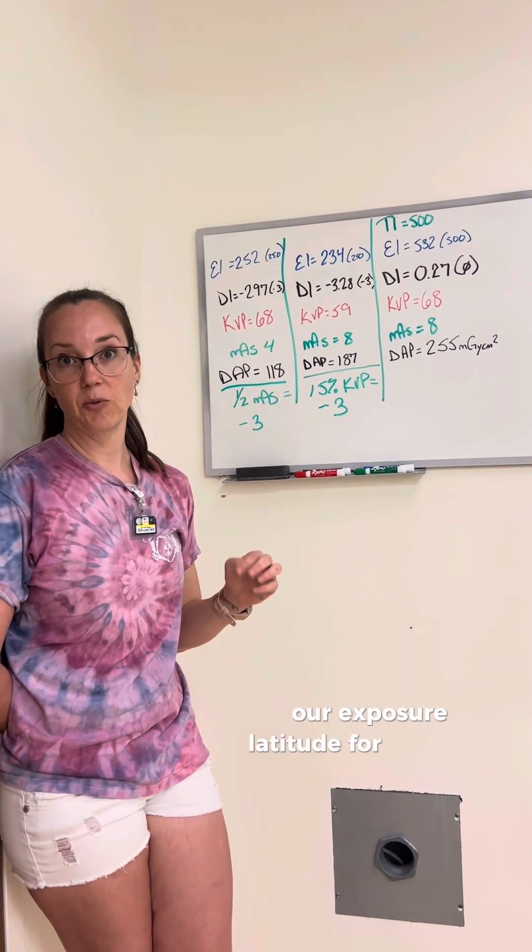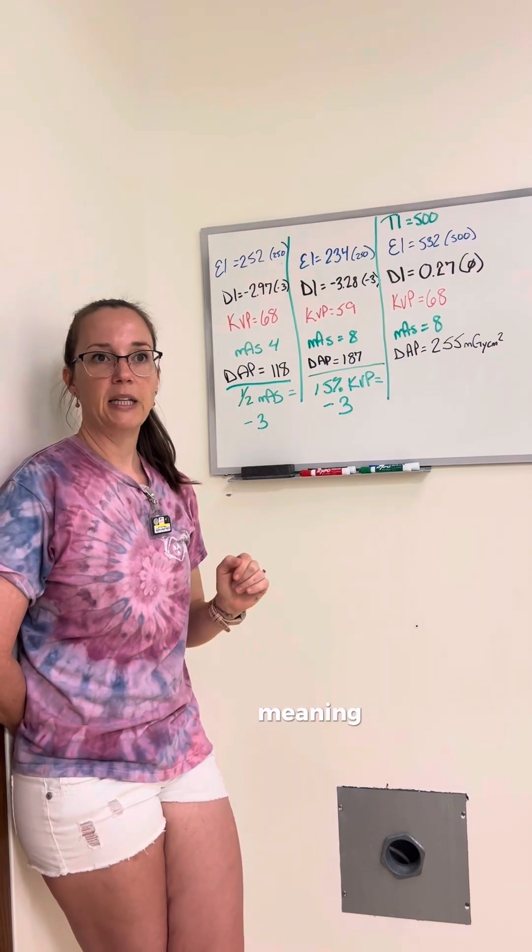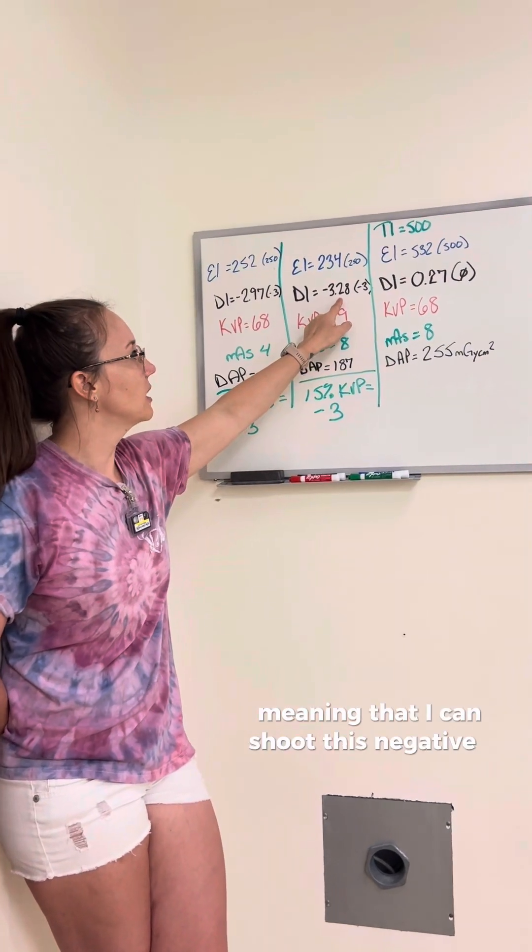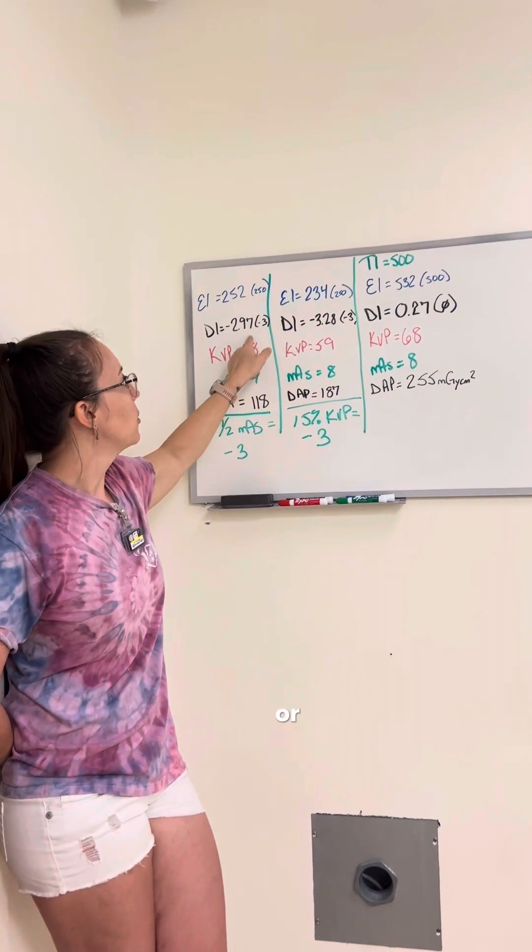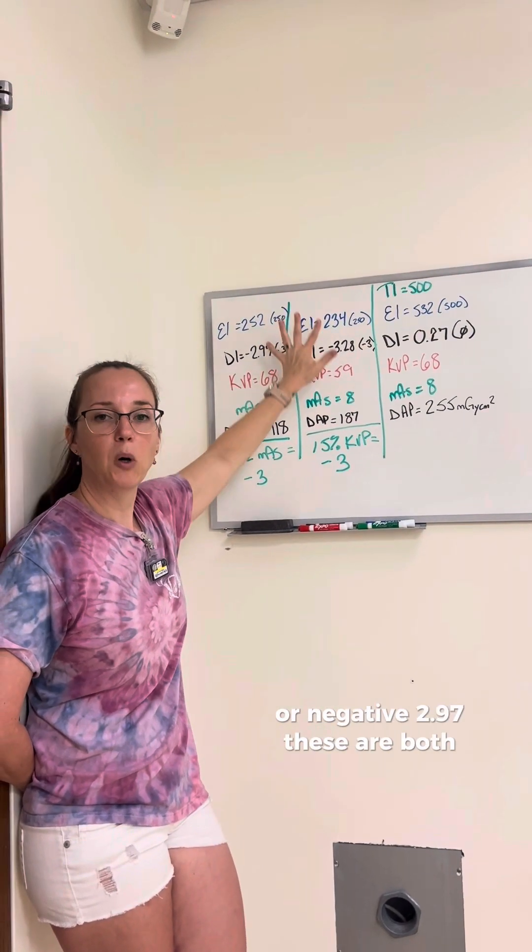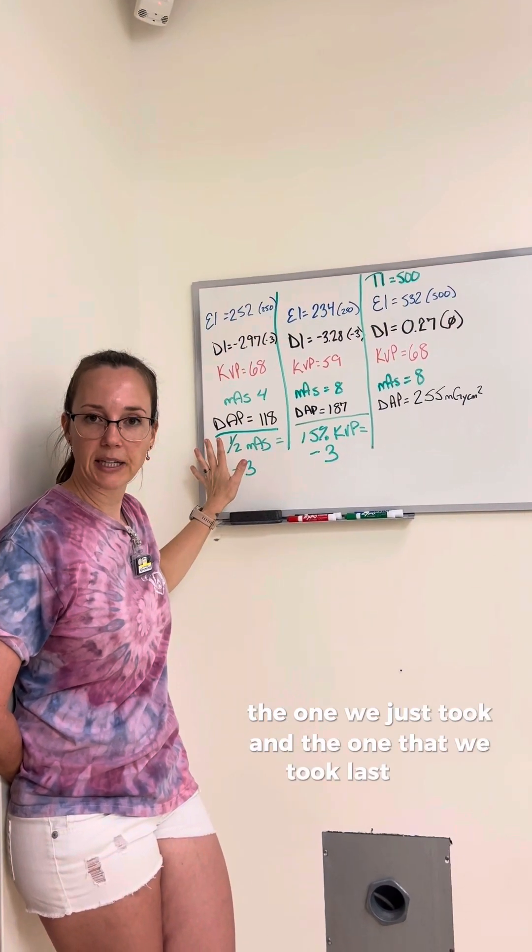I know you guys have all seen techs who are not doing more and less, but we're not going to talk about that. Our exposure latitude, for our room at least, is a negative 3 to a positive 3, meaning that I can shoot this negative 3, negative 3.28, I'd probably send it, it's close enough, or negative 2.97. These are both passable images, the one we just took and the one that we took last week.